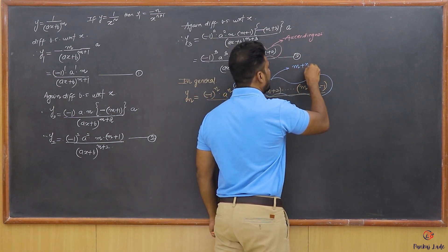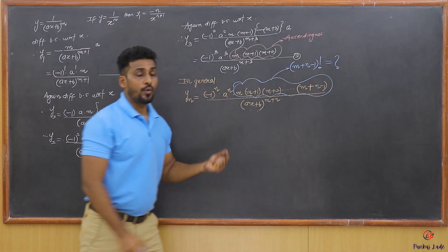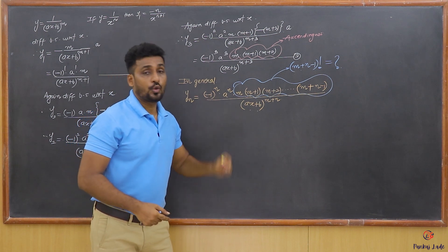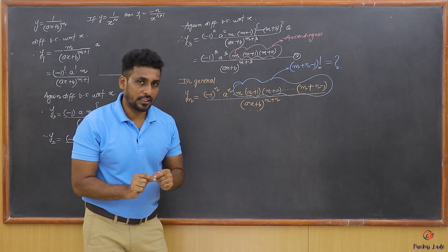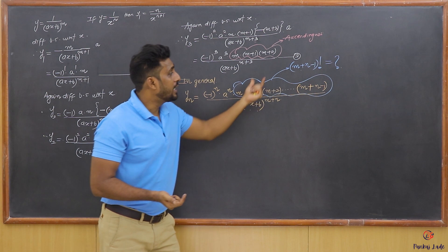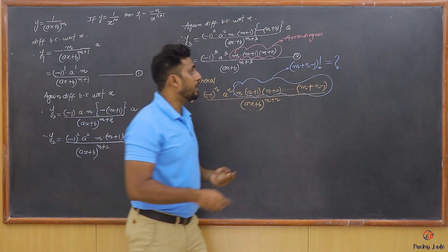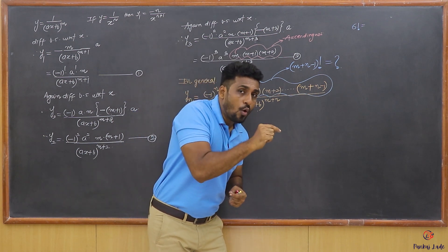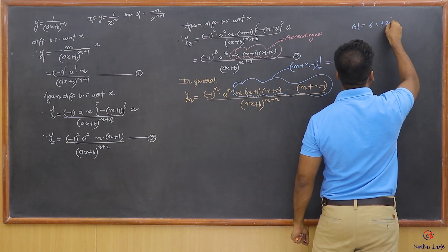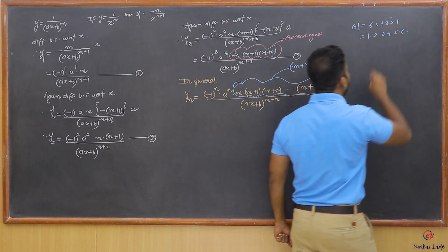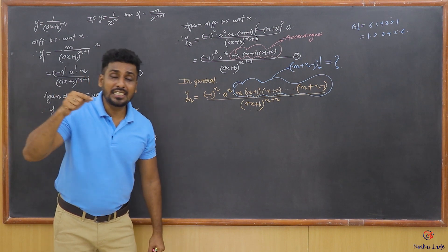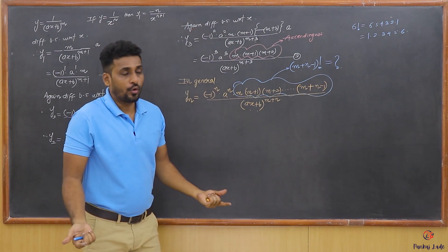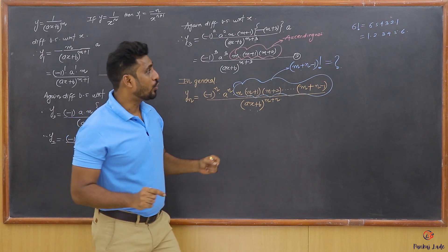Is m·(m+1)·(m+2)···(m+n-1) equal to (m+n-1) factorial? The answer is no — it is not (m+n-1) factorial. Consider 6! = 6·5·4·3·2·1; it descends to 1. Here the numbers ascend from m to m+n-1, so numbers before m are missing. Similarly, 3·4·5·6·7 is not 7! because 1 and 2 are absent.